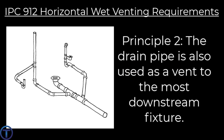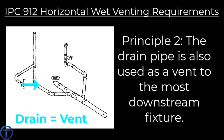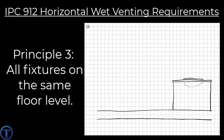Horizontal wet vent principle two: the drain is also considered a vent from the dry vent connection to the most downstream fixture drain connection. This means that the drain pipe is being used as a vent all the way through the horizontal branch to the last fixture connected in that horizontal wet vent.